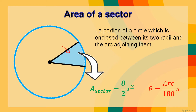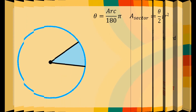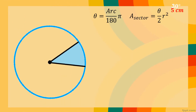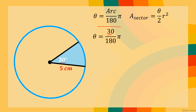Let's have the first example. In our figure on the left side, the angle measures 30 degrees and the radius measures 5 centimeters. To find the area of the sector, we first need to convert the degree measure to radian measure. Using the formula, θ = (30/180) × π. Simplifying 30 over 180 gives us θ = (1/6)π.